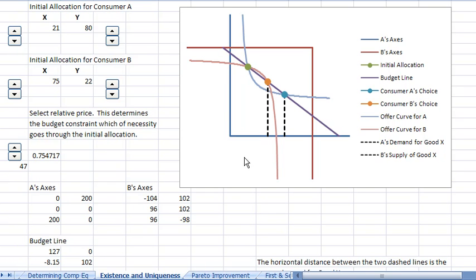So in this video, we're going to talk about the existence of competitive equilibrium. Let's again note, this is the original allocation, and this blue point here represents A's choice on the budget line.